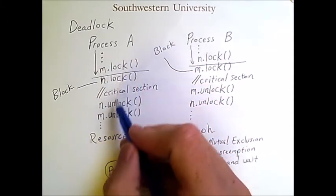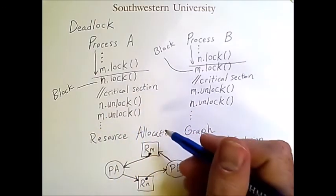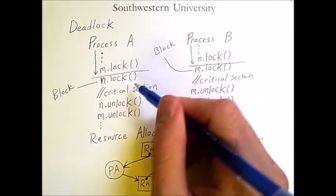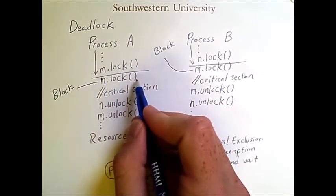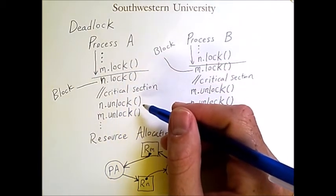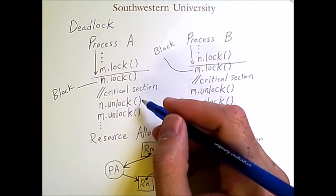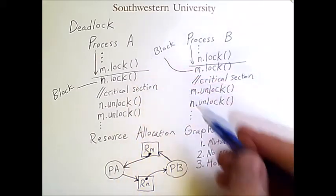So process A will lock mutex M and hold onto it until it gets through all of this code and unlocks it. This is true even if the process blocks forever because it cannot get resource N. So it's holding onto this resource. It's going to wait until it has all the resources it needs to execute this code. And so it's waiting while holding onto that resource.